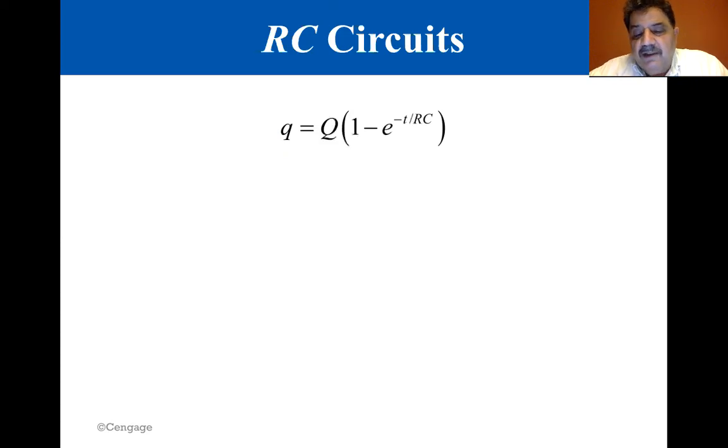The term RC in the equation is called the time constant tau. The time constant represents the time required for the charge to increase from zero to 63.2 percent of its maximum equilibrium value. This means that in a period of time equal to one time constant, the charge on the capacitor increases from zero to 0.632 Q.